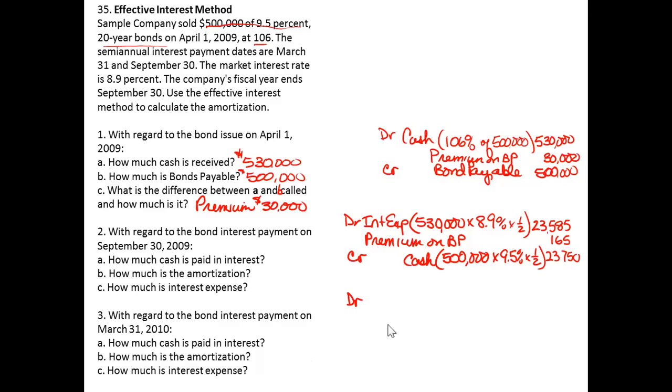So how much cash is paid in interest? $23,750. How much is amortized? $165, which is the difference between the cash paid for interest and the interest expense. And C says, what is the interest expense? $23,585.